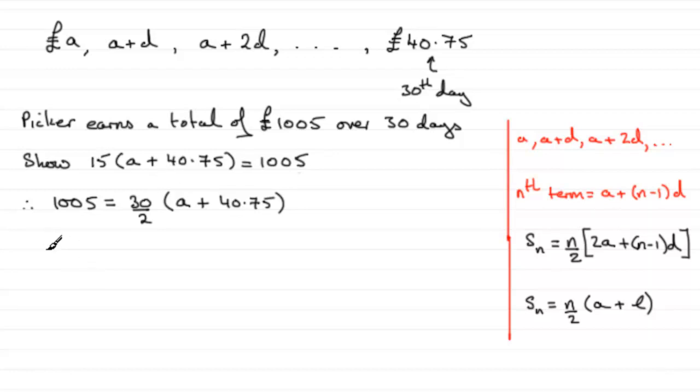so we've got that therefore 15, I'd write it the same way by the way as we've got to show, so we've got 15 here multiplied by A plus 40.75 equals the 1005.